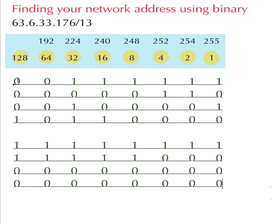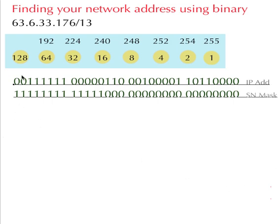What I'm going to do is pause the video now. We've worked out the IP address in binary and we've worked out the subnet mask in binary. I'm going to shrink this down and come back, and then we'll do a binary AND on it. Hi, welcome back. What I've done is laid out the top row as the IP address and the second one is our 13-bit subnet mask.